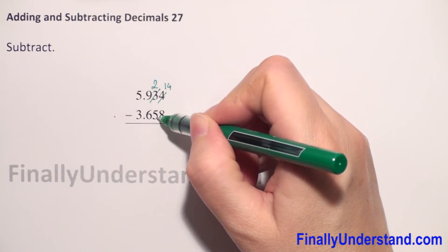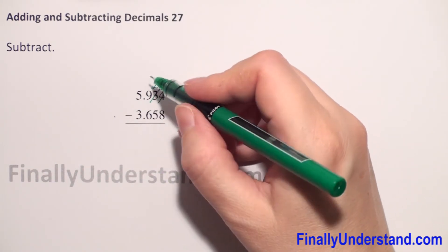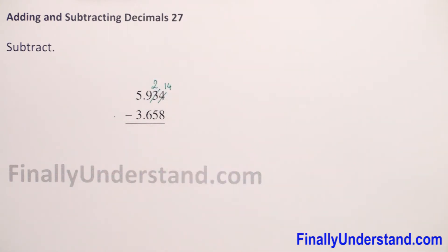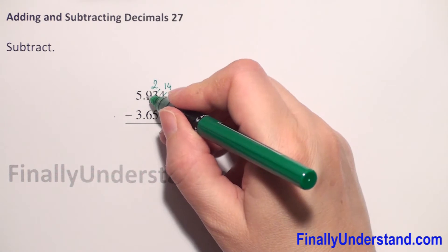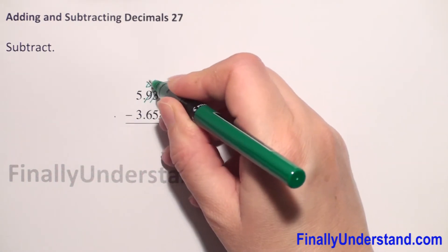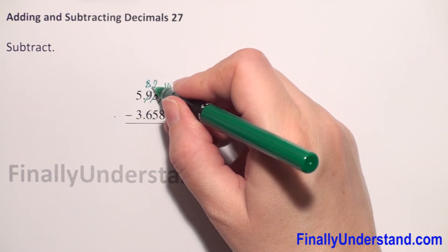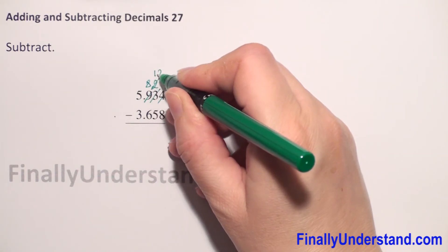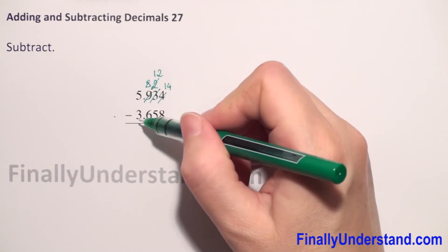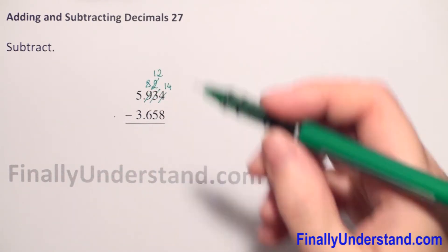2 is less than 5 so we have to do borrowing one more time. So now we will have 9 minus 1 will be 8, and we will have now 12, and 5 is greater than 3 so everything is okay.